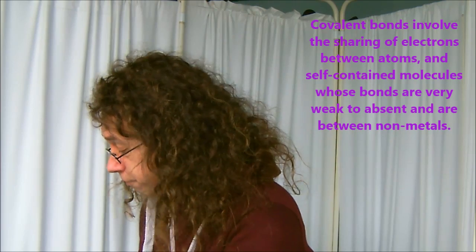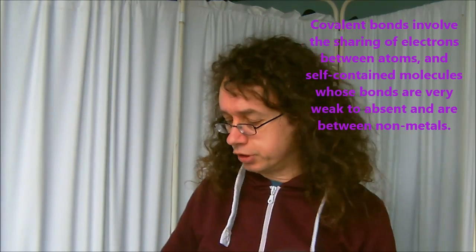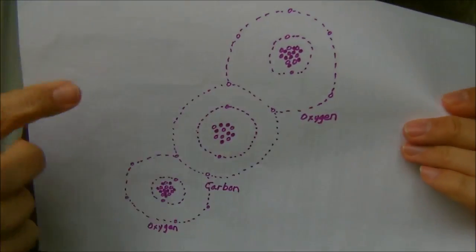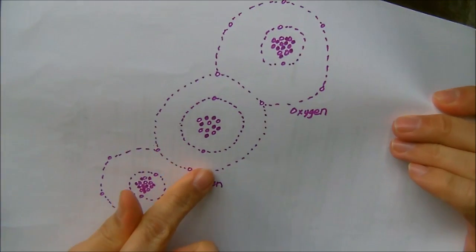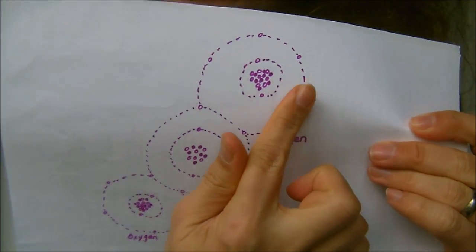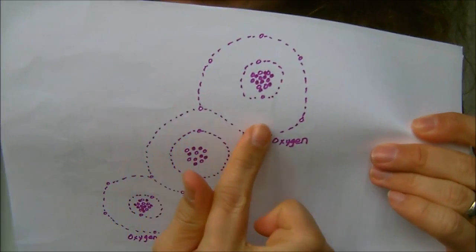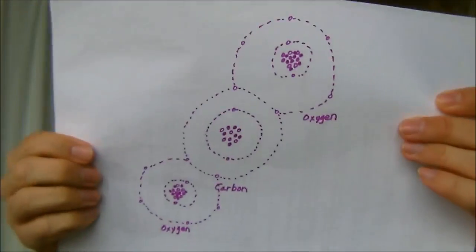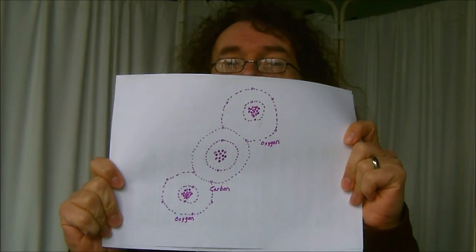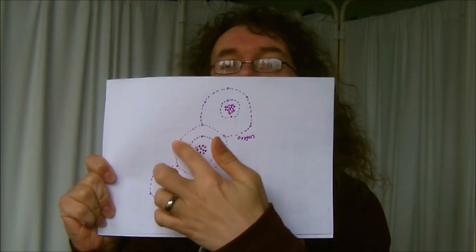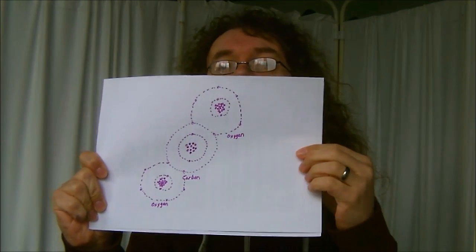Now actual molecules — because ionic compounds don't really form molecules — are different. They have covalent bonds, and covalent bonds are usually between non-metals. Here is an oversimplified diagram of a carbon dioxide molecule. You've got the carbon in the middle with four electrons in its outer shell and the oxygen with six electrons in its outer shell. What they do is actually share their electrons — you've got a larger orbital which joins them together.